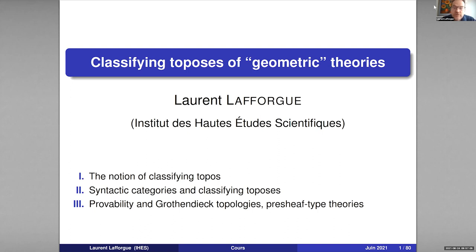These two parts of the lectures date back to the 1950s. I will mention the names of the people who were involved in this theorem and its proof. The last part of the lecture will consist of basic results which are more recent, taken from the PhD thesis of Olivia Caramello twelve years ago, and her book Theories, Sites, Toposes. These basic results allow to begin to make the theory of classifying toposes efficient for establishing concrete results in mathematics.